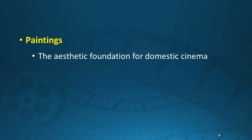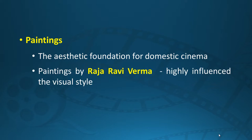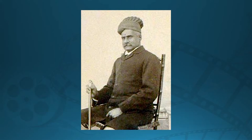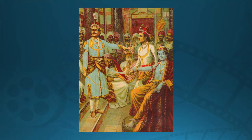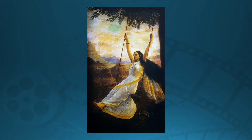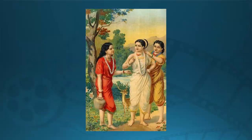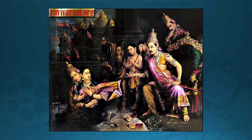Let us talk about paintings first. Paintings laid the foundation for the aesthetic aspect of cinema. You have heard the name of Raja Ravi Verma, the very famous Indian painter, and his visual style came to influence photography and later on a lot of cinema produced during the silent era. The kind of mythological iconography used in cinema was derived from the paintings of Raja Ravi Verma.